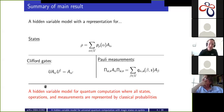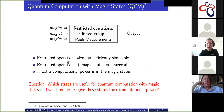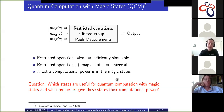The main takeaway is this: it's a hidden variable model for quantum computation with magic states where all of the elements — the states, the Clifford gates, and the Pauli measurements — are represented using only classical probabilities. The extra computational power of quantum computation lies in the magic states themselves, nothing to do with the operations.